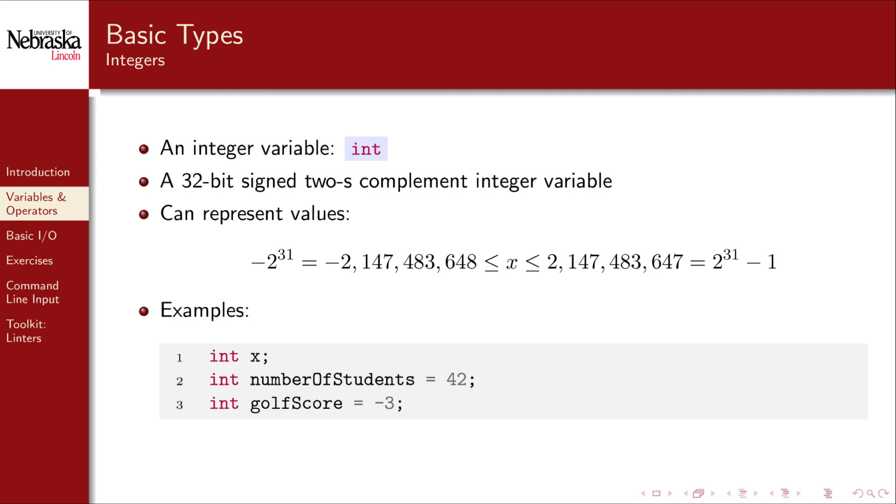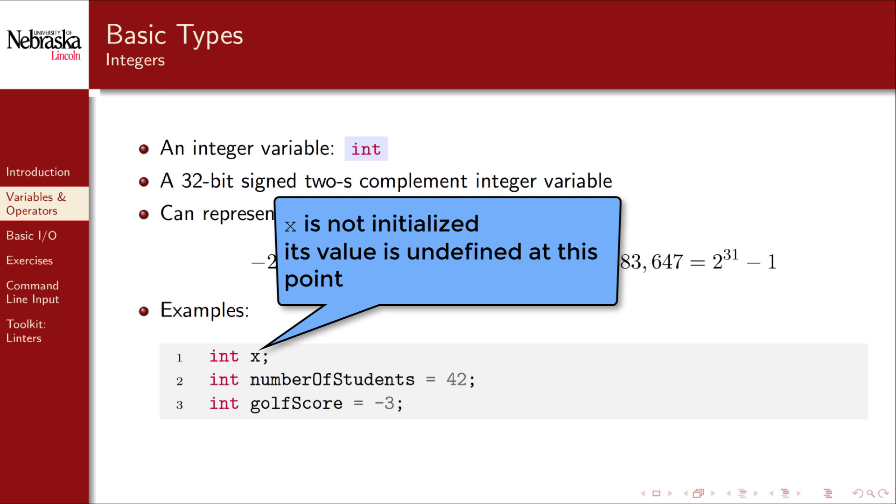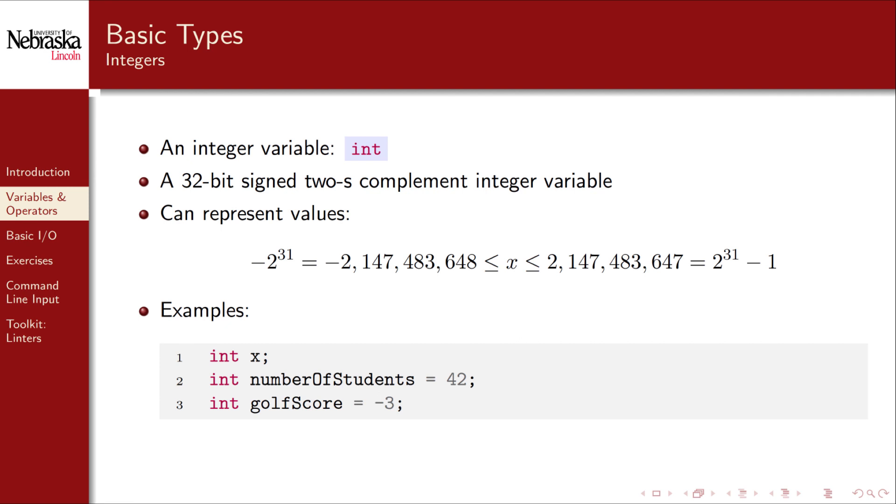In each declaration we specify the variable's type, its name, and we can optionally set its value as in the second two examples. If you do not assign a value to a variable, its contents are undefined. C does not specify a default value to be stored in variables. It could be 0 or it could be a garbage value. It all depends on your compiler and your operating system. Thus it's best practice to assign the initial value whenever possible.